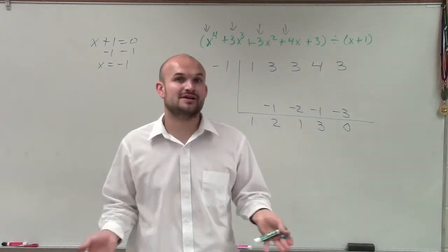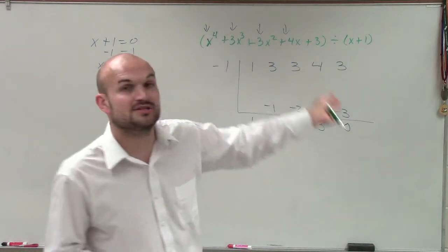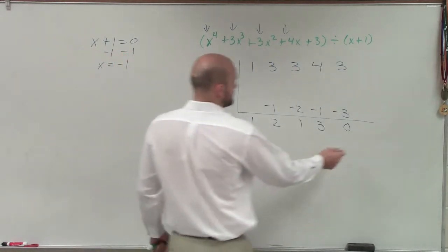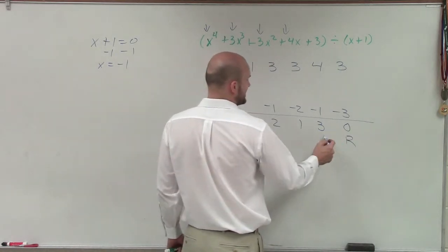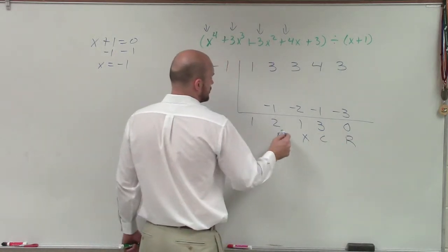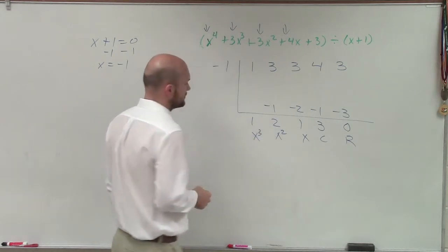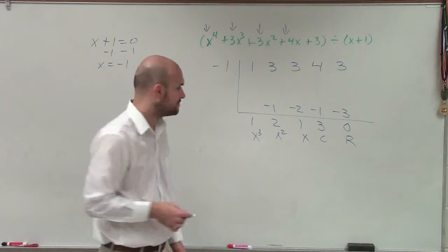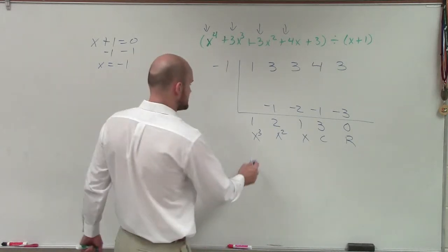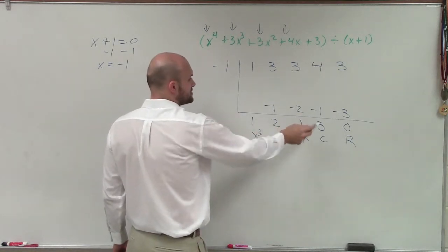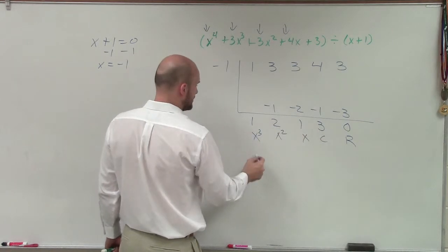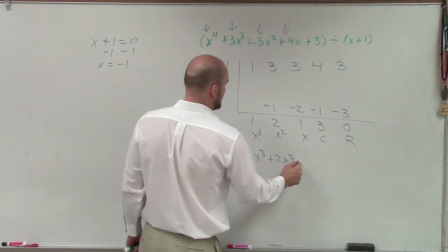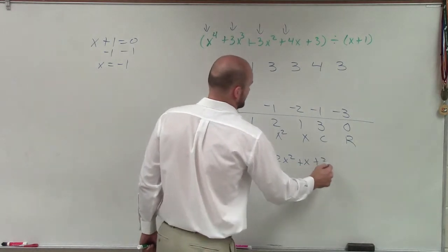Then I add 3 plus negative 3, which gives me 0. Since the remainder is 0, I know that x plus 1 evenly divides into my polynomial. Working backwards from the remainder: constant, linear, quadratic, cubic — these are the coefficients and constant for the resulting polynomial. So it would be x cubed plus 2x squared plus x plus 3.